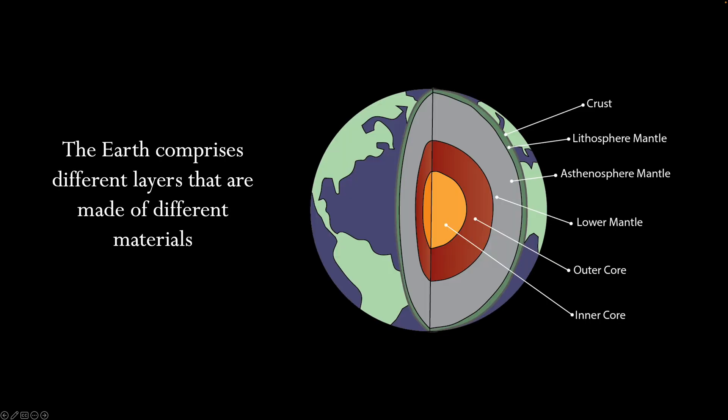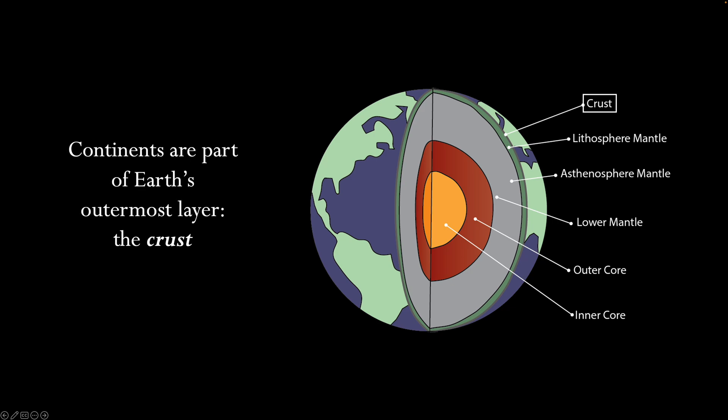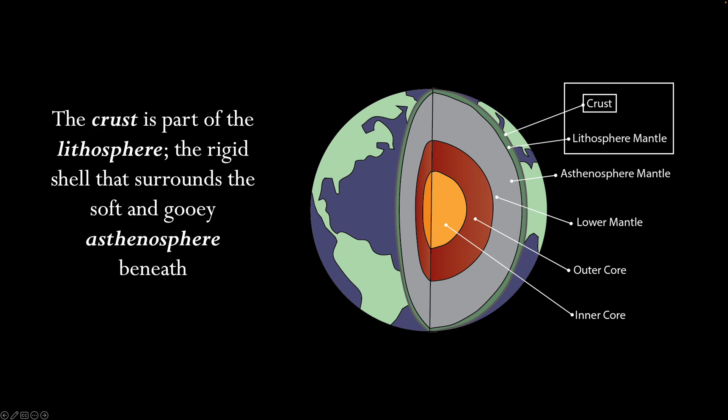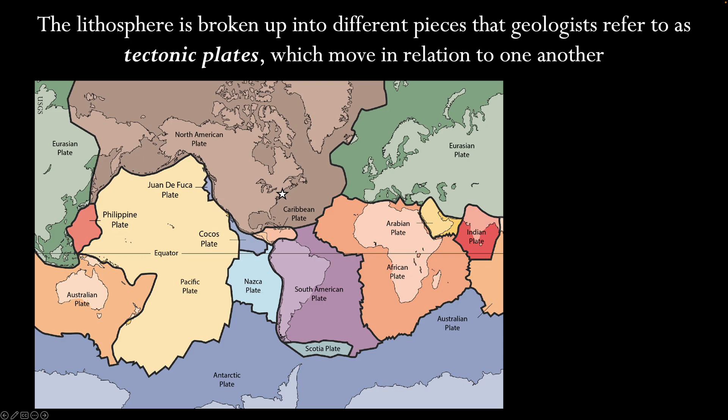The Earth comprises different layers that are made of different materials. Continents are part of Earth's outermost layer, the crust. The crust is part of the lithosphere, the rigid shell that surrounds its soft, gooey, and viscous asthenosphere beneath. The lithosphere is broken up into different pieces that geologists refer to as tectonic plates, which move in relation to one another.